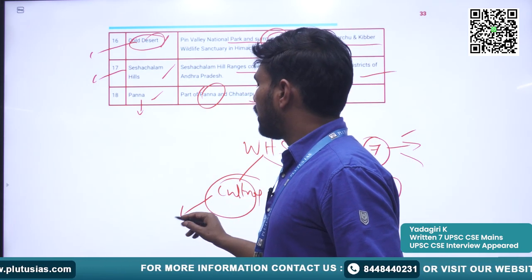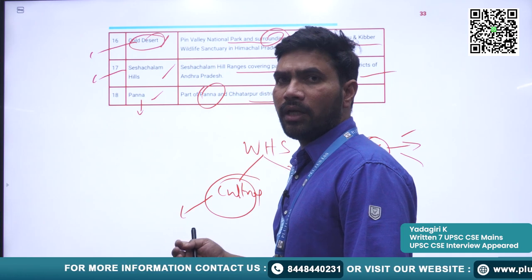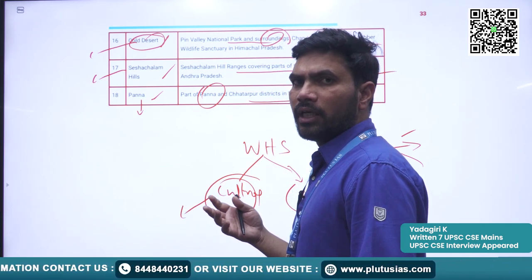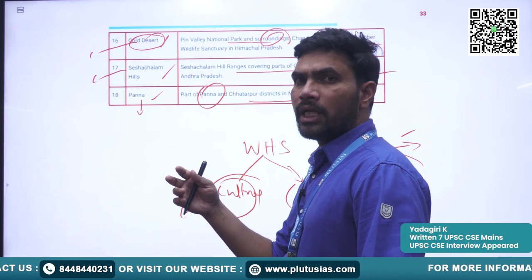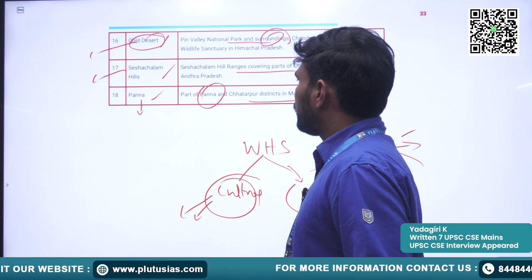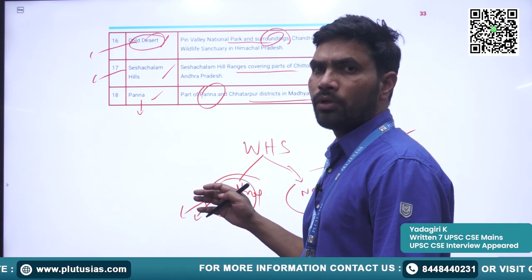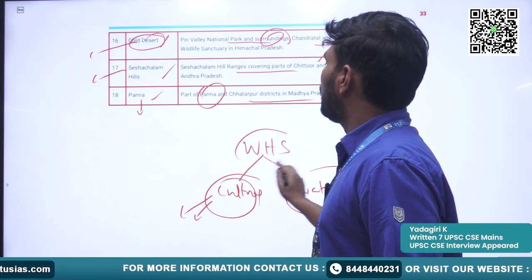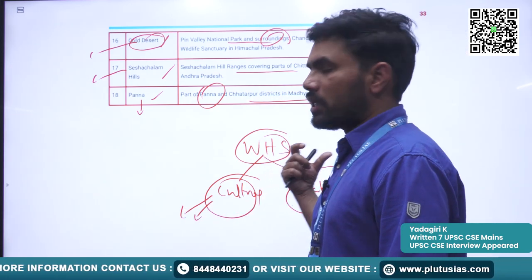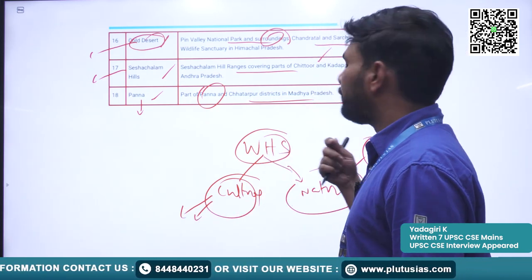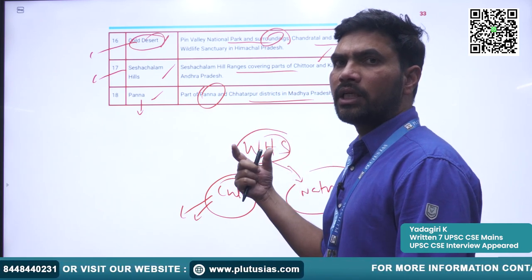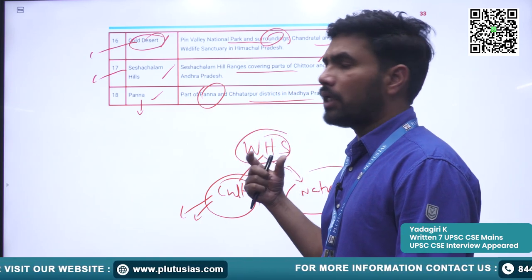Apart from that, there are Cultural World Heritage Sites — around 40 sites in India. When I cover the history part, I will cover these Cultural Heritage Sites. Try to find some information about these seven natural and one mixed World Heritage Sites recognized in India.